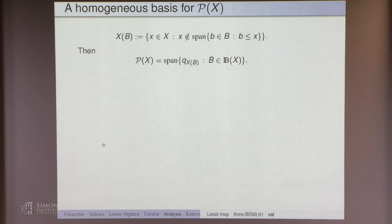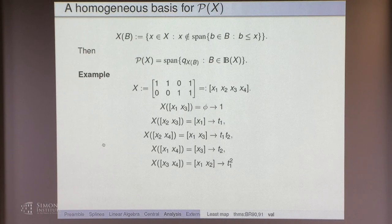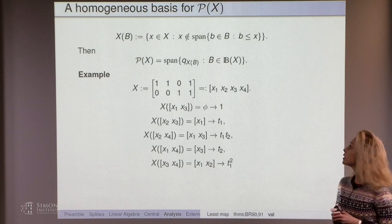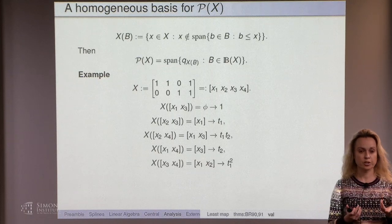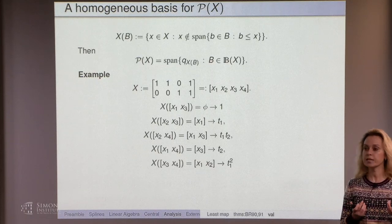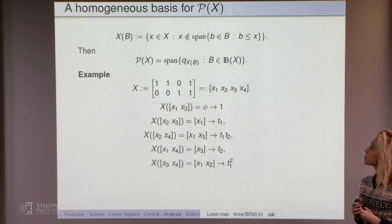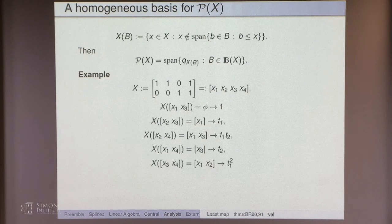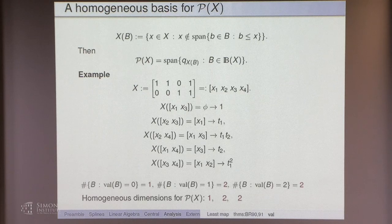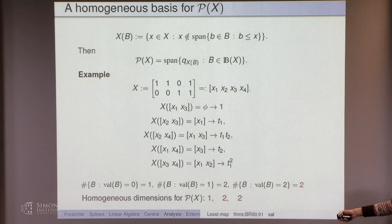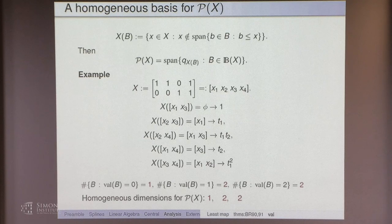You now have a homogeneous basis for P. At the time we wrote the paper, we didn't have a homogeneous basis for D, but then later Matthias Lenz produced a homogeneous basis for D. So now you can also have a very nice homogeneous basis for D. You see those dimensions emerging again — the numbers one, two, two.